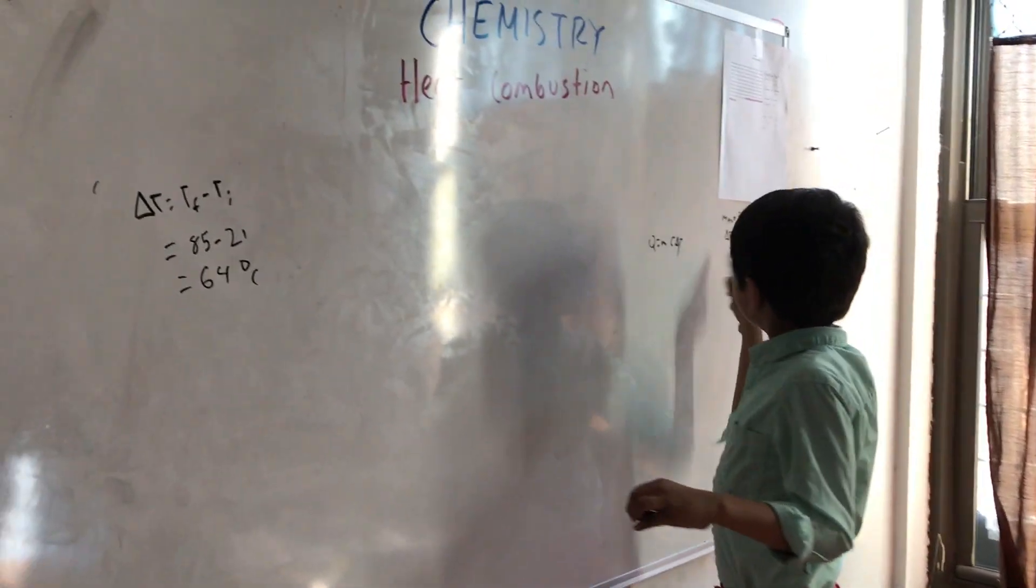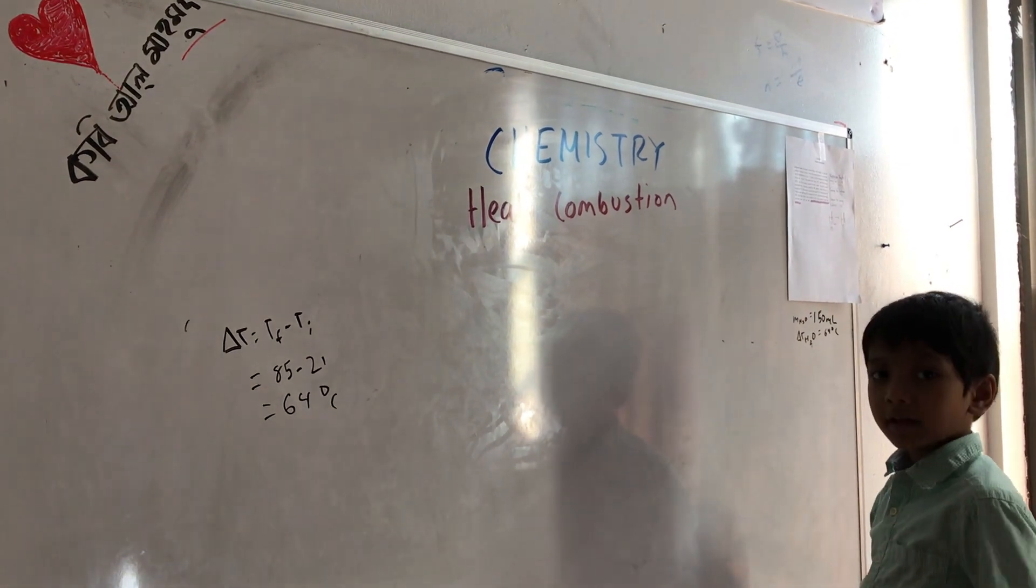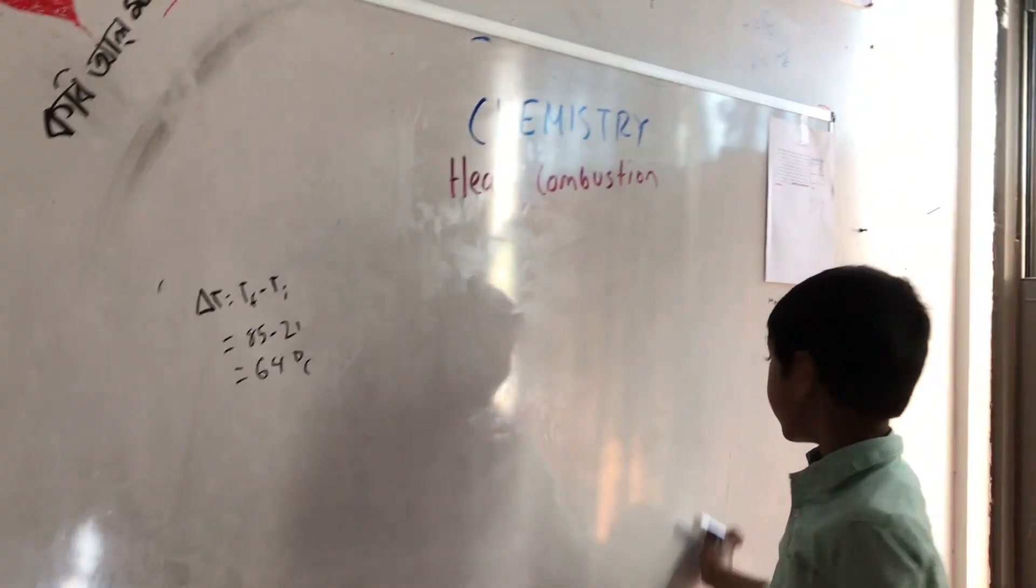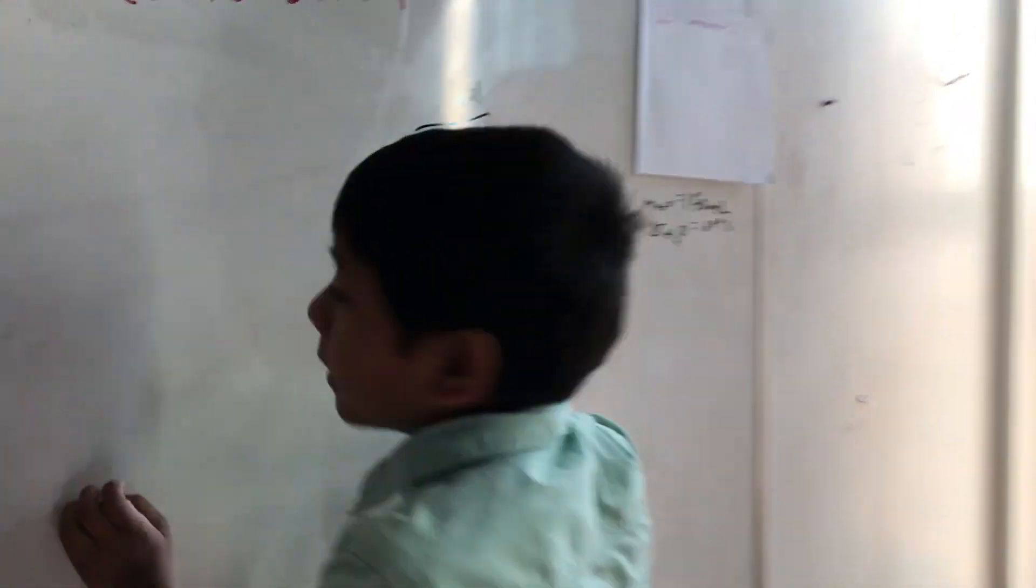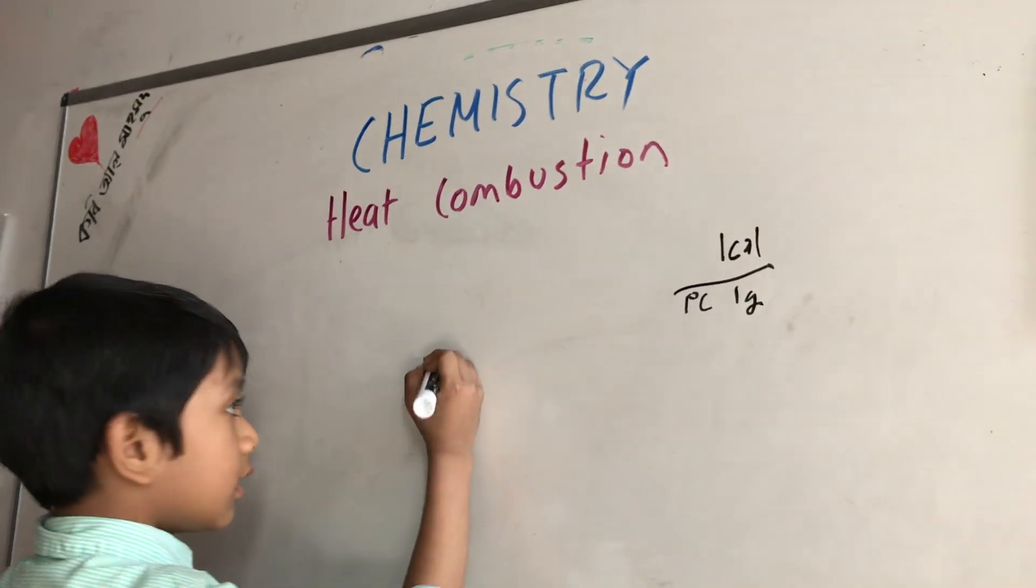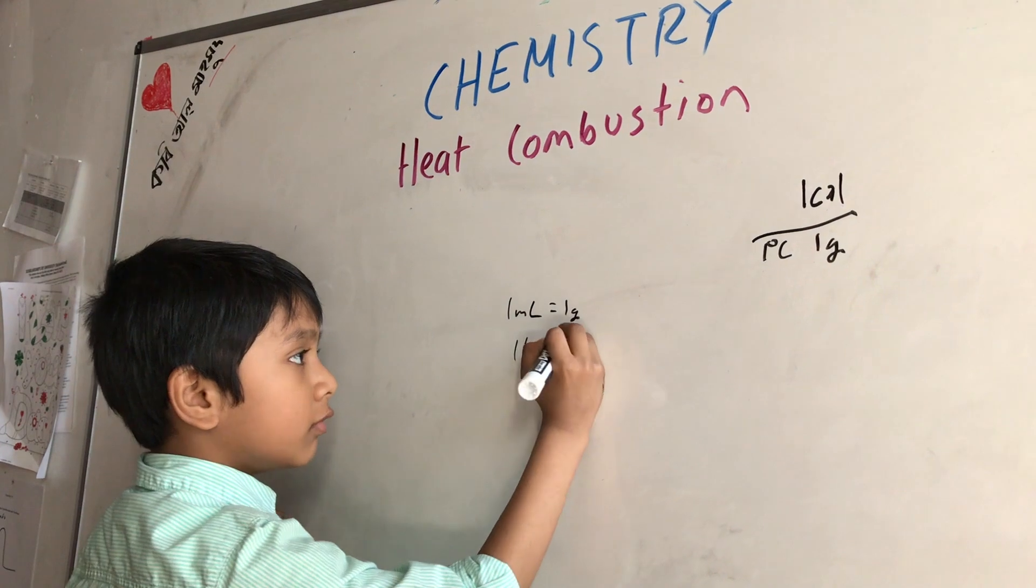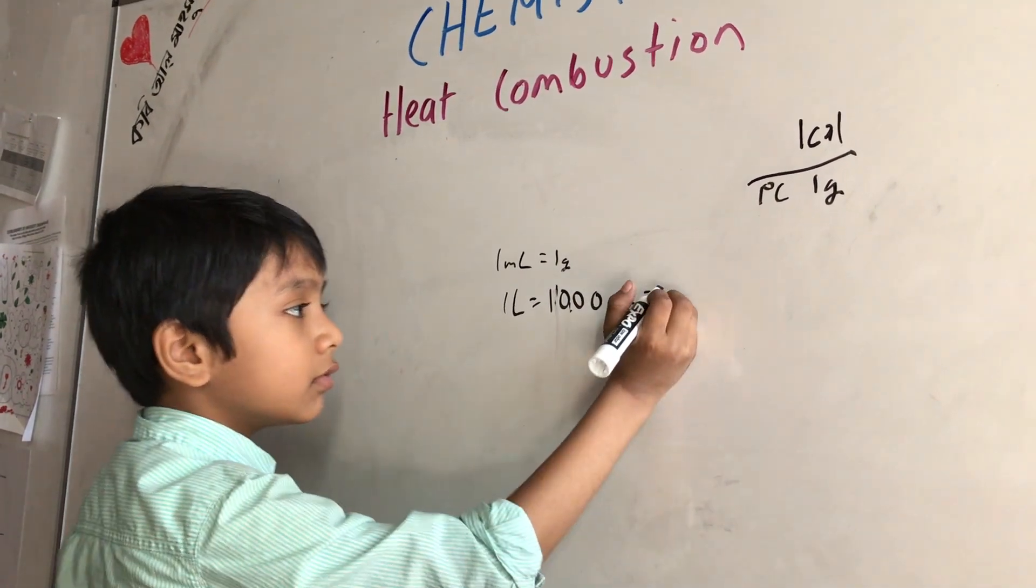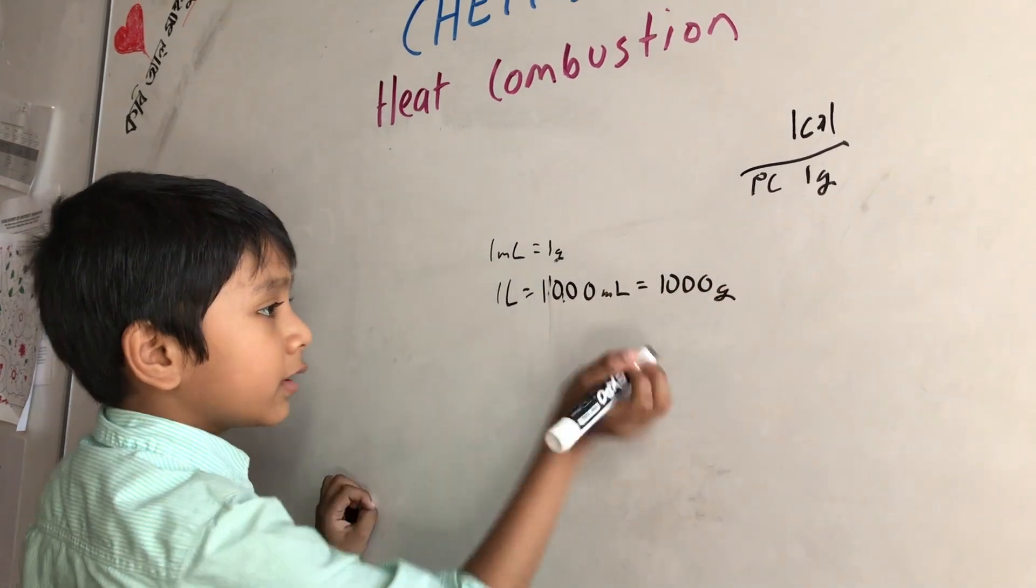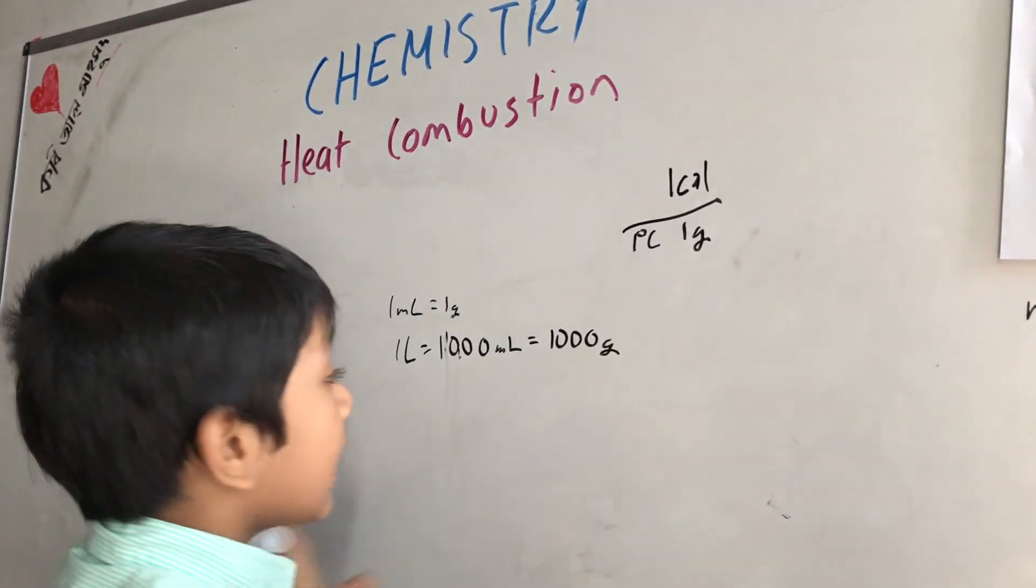Now you might think it's Q equals M C delta T, but surprisingly, these two components are what we all need. We don't have to use the heat capacity for water. Instead, we'll replace it with this: one calorie divided by one degree Celsius one gram. And this is also going to be important. One milliliter is equal to one gram.